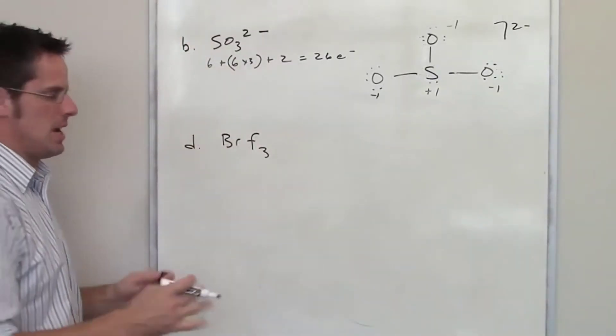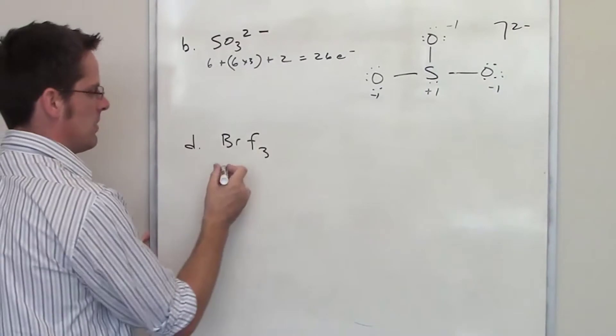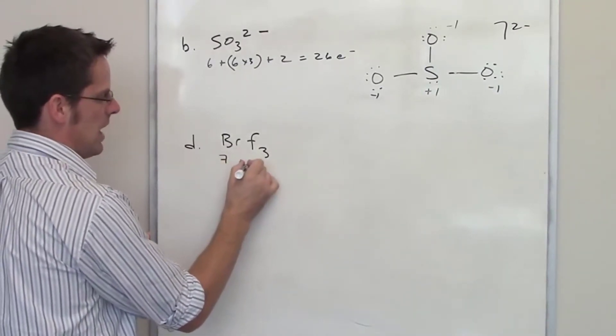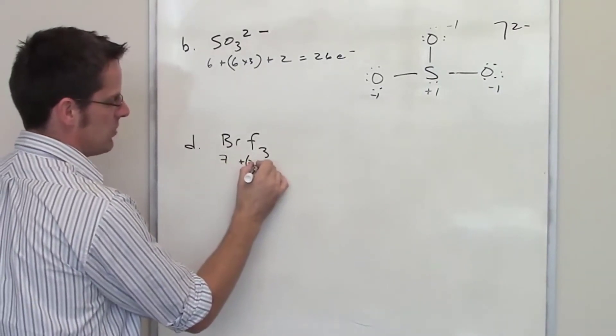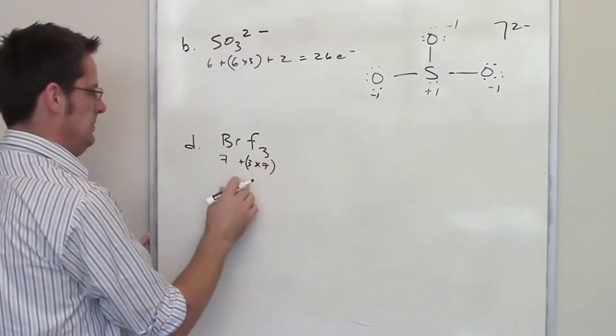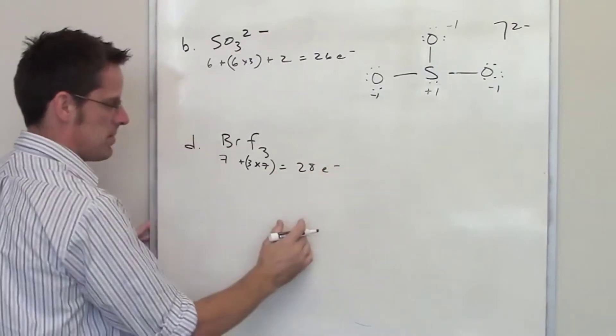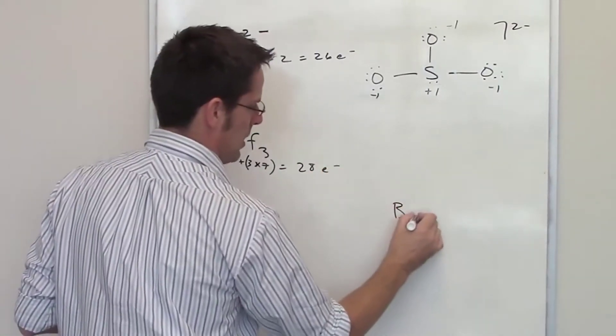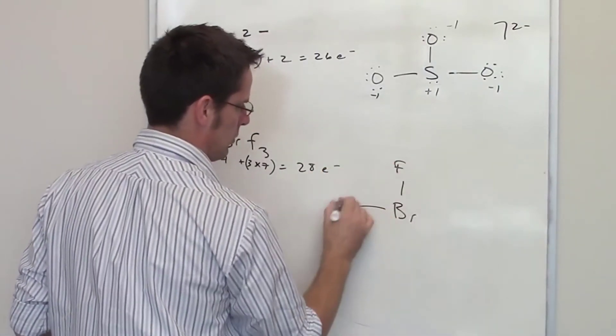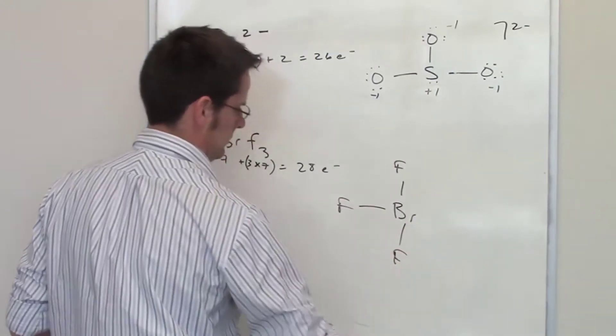Well, now look at this other example. Drawing the Lewis structure, step one, I count the total number of valence electrons. I've got seven on bromine. I have three individual fluorines, each of which has seven valence electrons. So I add all of that up. It gives me 28 total electrons to play with. I now draw out the bonds. Bromine goes to fluorine, fluorine, fluorine.